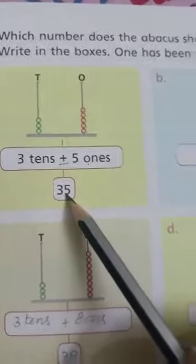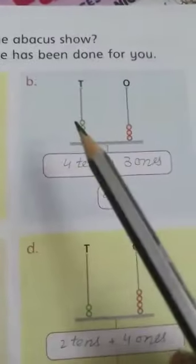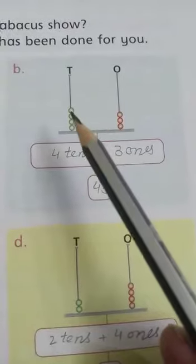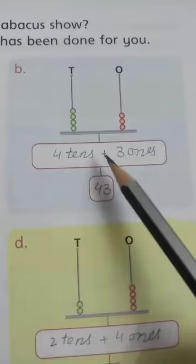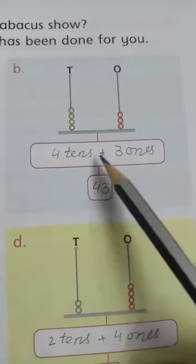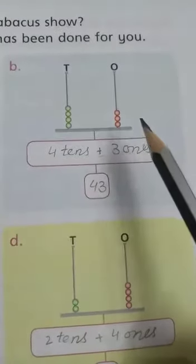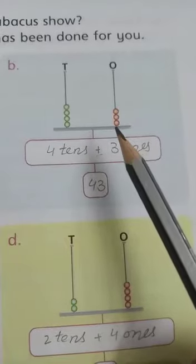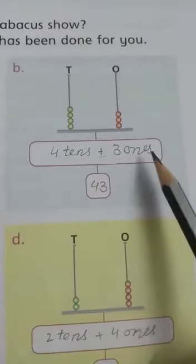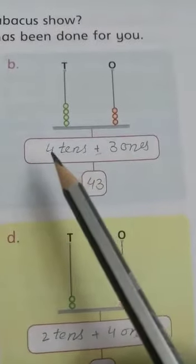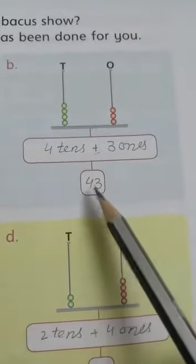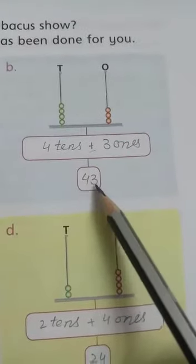Three tens and five ones makes 35 — write 35 here. Now come on to question b. How many tenths? One, two, three, four — write the spelling 'tens' and the plus sign in the center. How many ones? One, two, three — write 'ones'. The total is forty-three, 43.